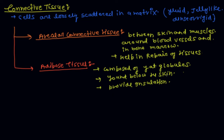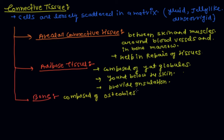The third type of connective tissue is bone. Bone is mainly composed of osteoblasts. Bone makes the skeletal system, which is responsible for providing structural framework to the body, and it also provides protection to important organs and facilitates movement.